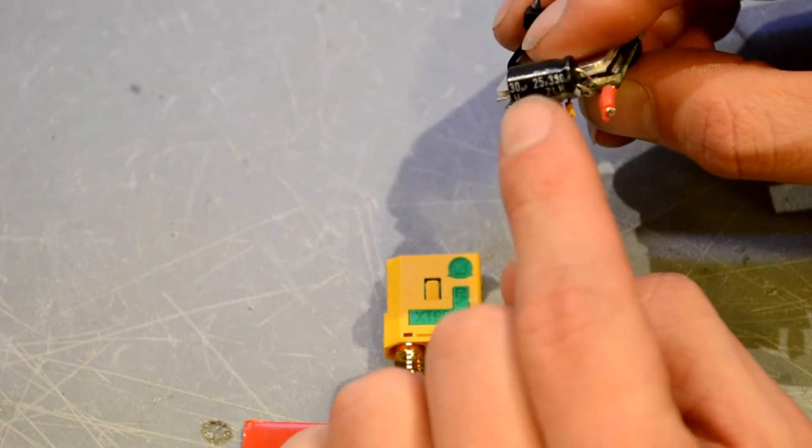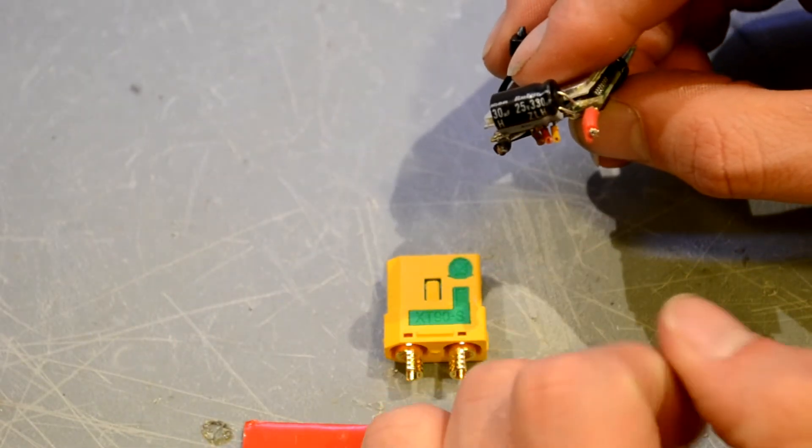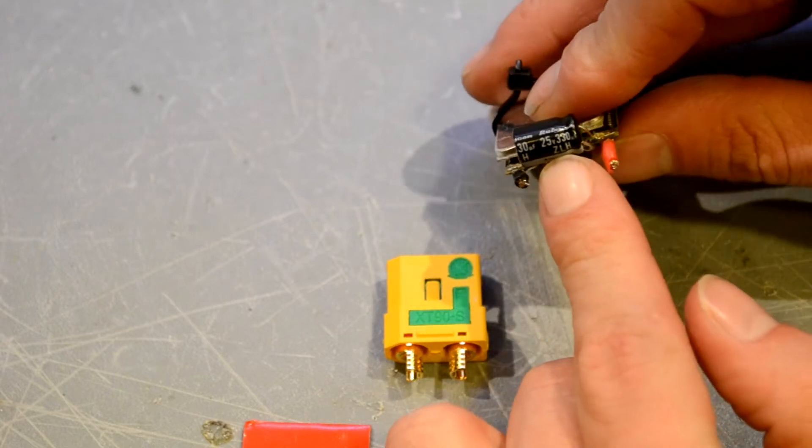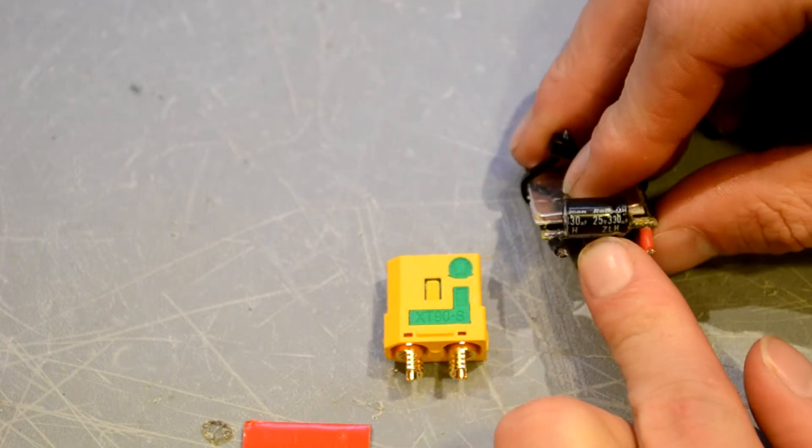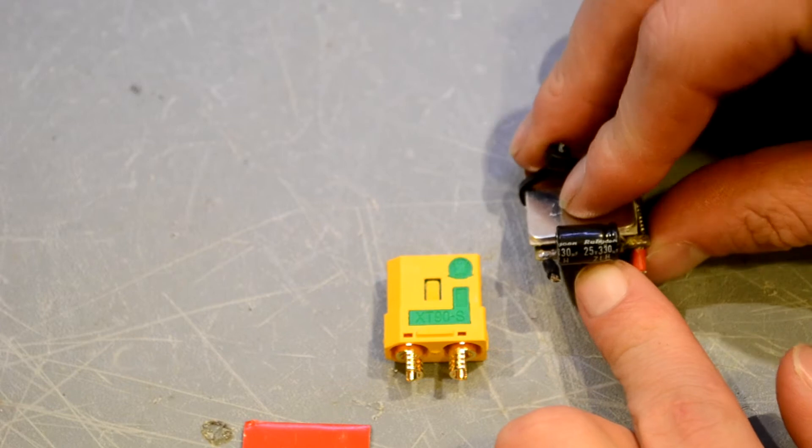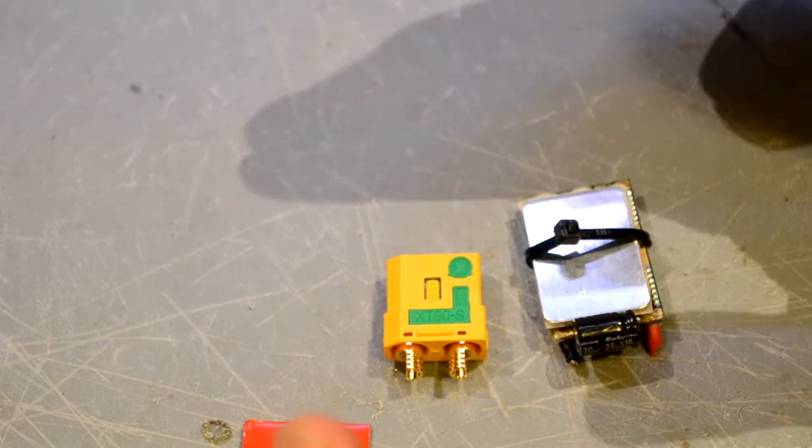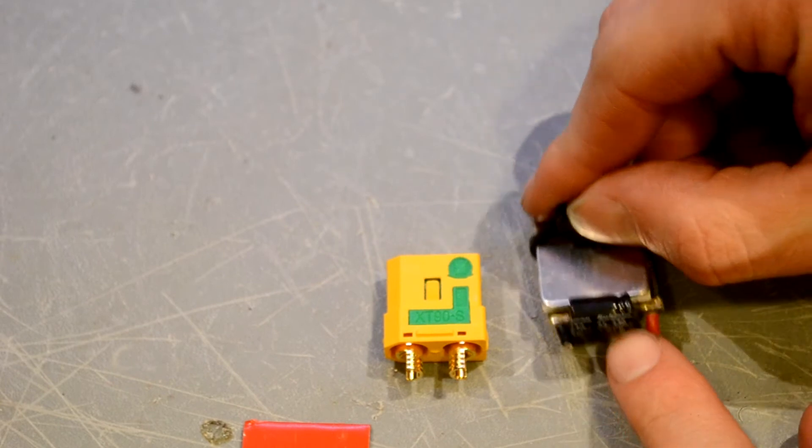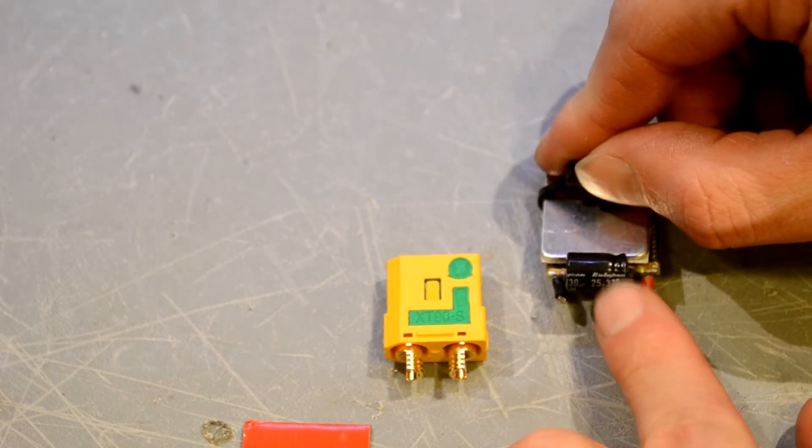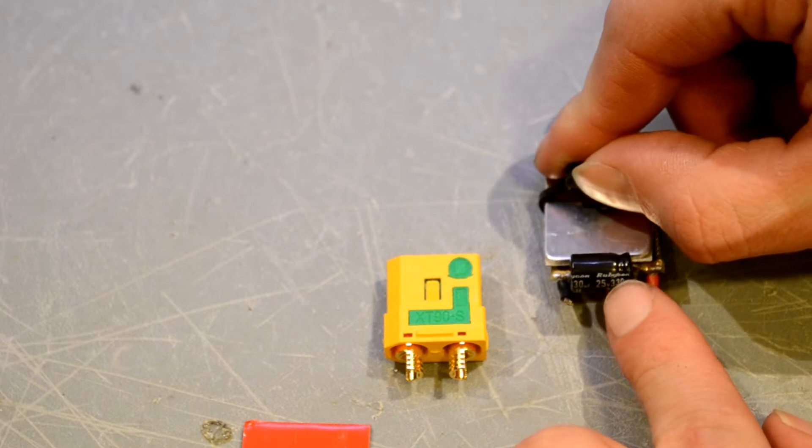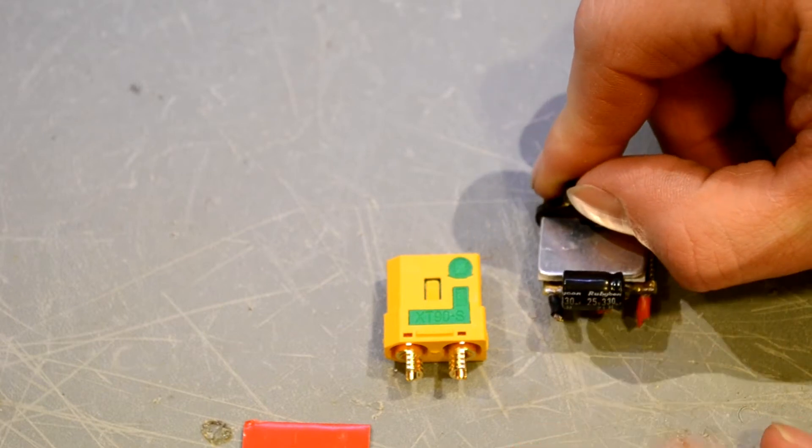And this guy hanging out right here on the ESC. This is a capacitor wired in parallel with your battery input. So let's go ahead over to the whiteboard and I'll kind of explain to you guys why these are here and what happens when you start putting way more voltage than most people do into a setup.